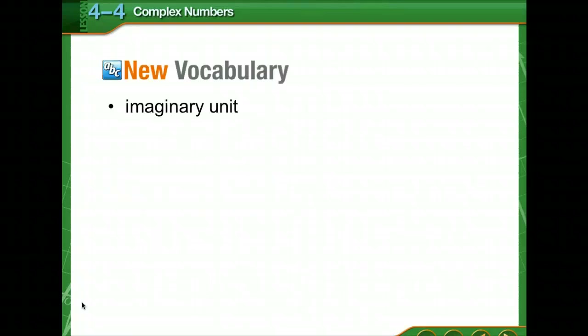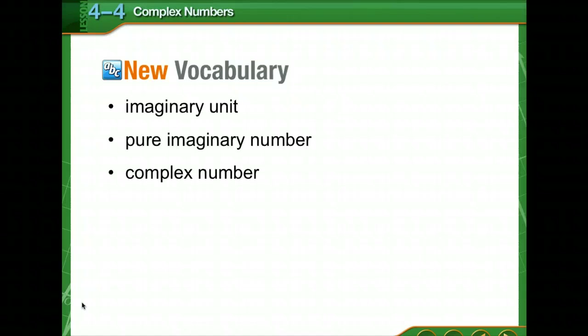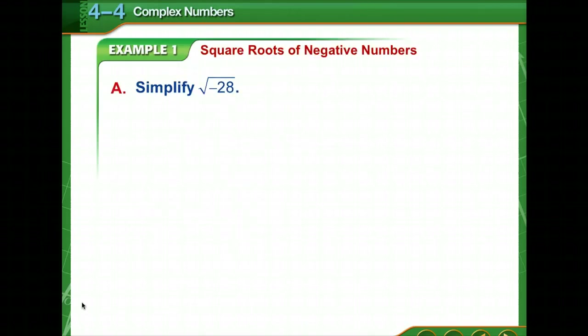We have four new vocabulary words: the imaginary unit, pure imaginary number, complex number, and complex conjugates. The imaginary unit i is defined to be i squared equals negative 1. The number i is the principal square root of negative 1 — that is, i equals the square root of negative 1. Previously we haven't been finding the square root of negative numbers; we knew the answer was not a real number. The pure imaginary numbers are square roots of negative real numbers.